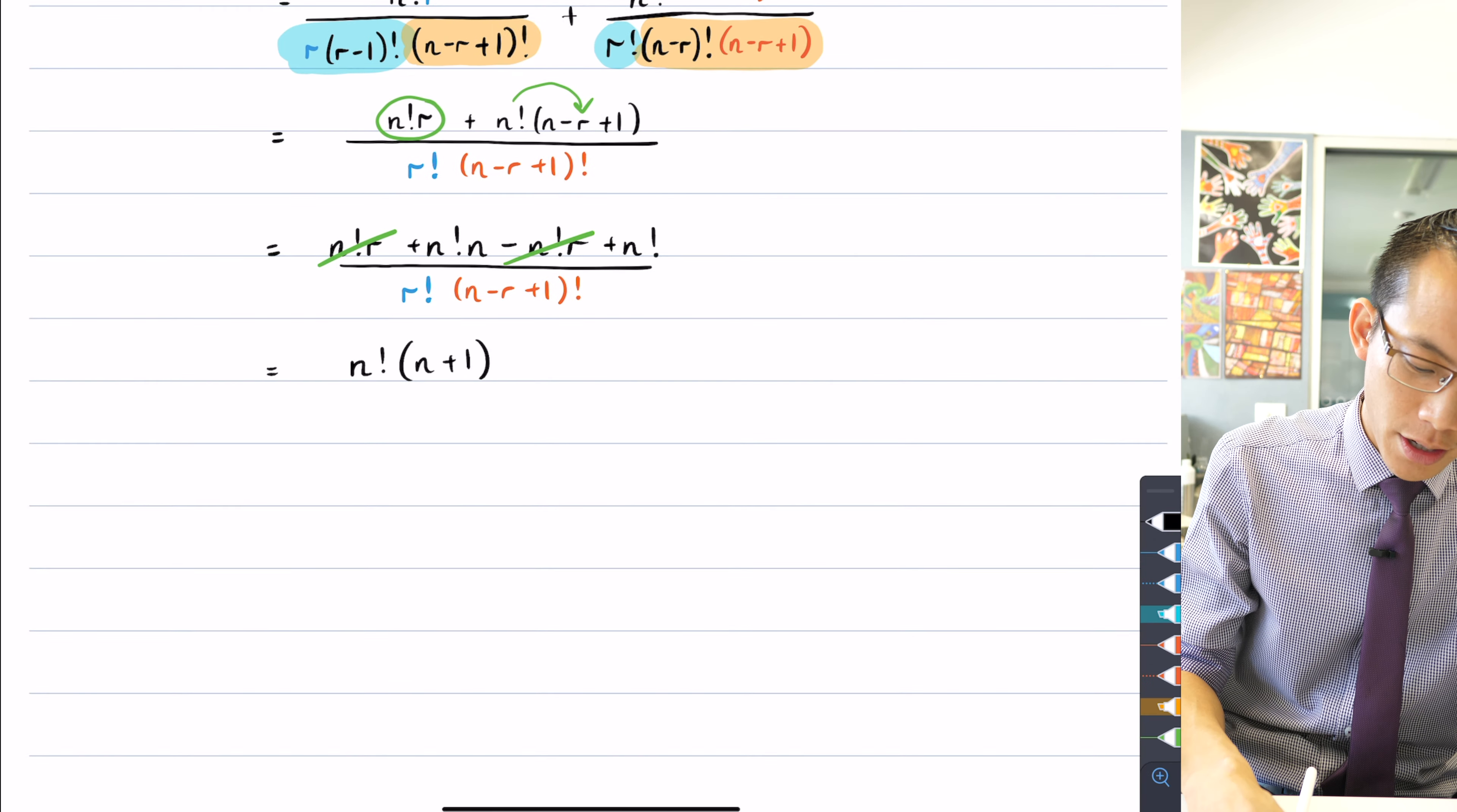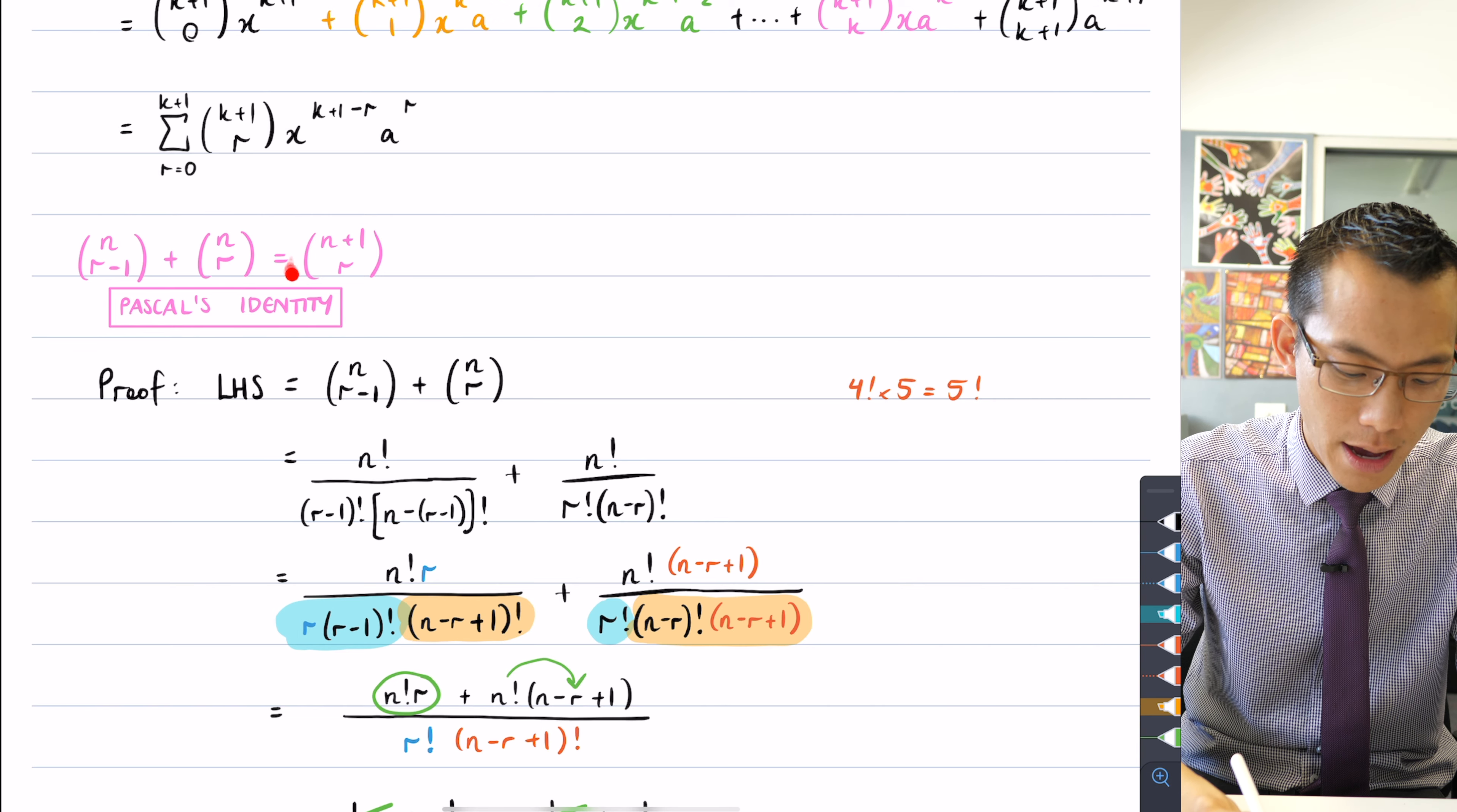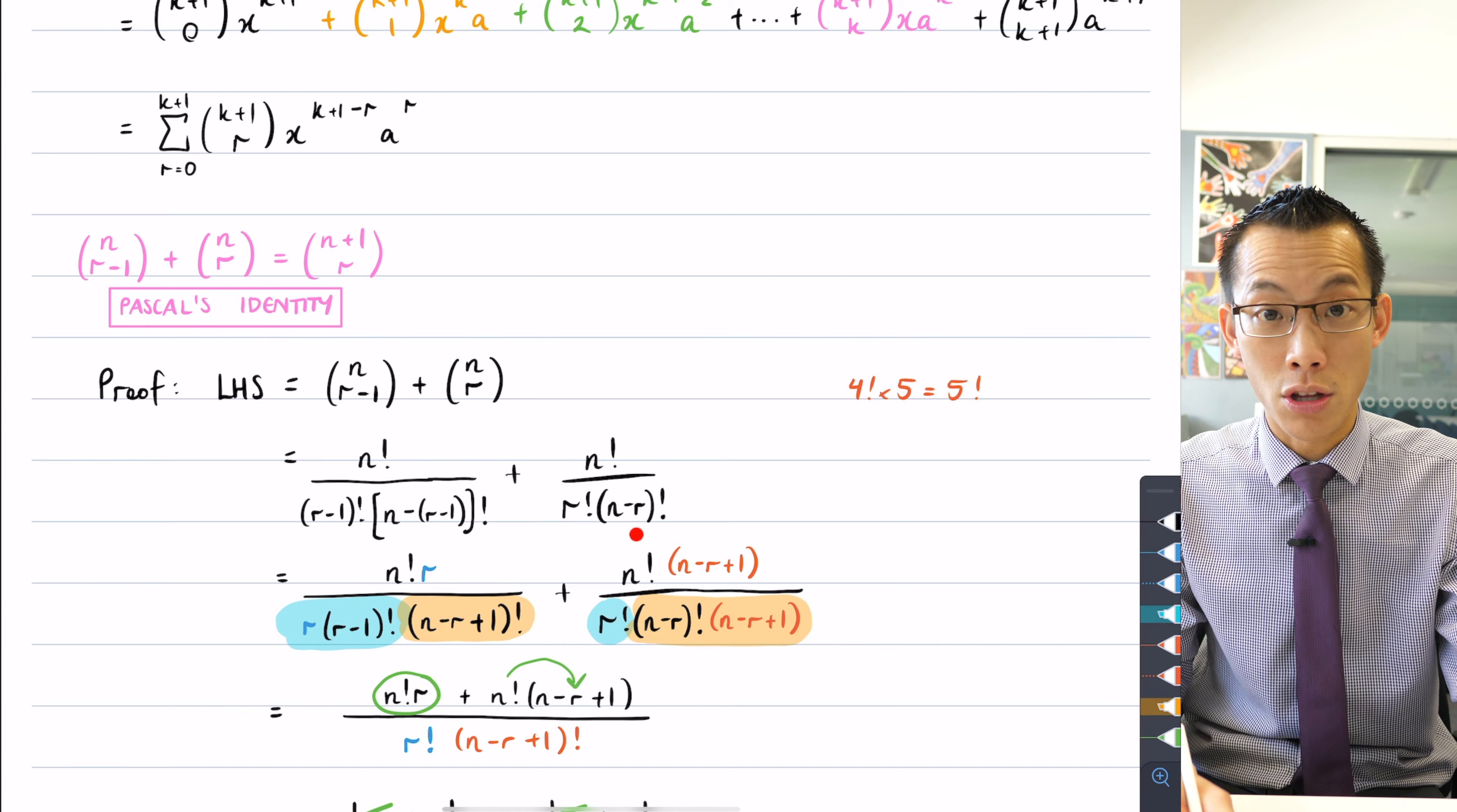And then on the denominator I'm going to make a very, very minor change so you can see where I'm going, right? Have a look at what I'm trying to prove. I'm trying to prove that this is equal to n plus 1 choose r. Which means I need to find an n plus 1 on the numerator and I also need to find an n plus 1 on the denominator. Now it is there, it's just kind of hidden, right?